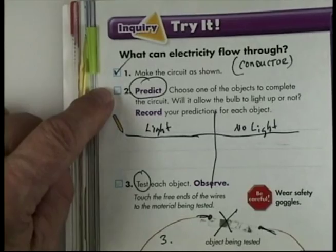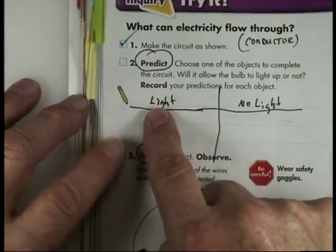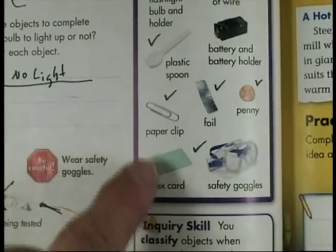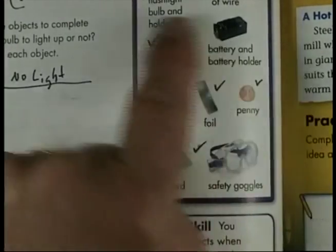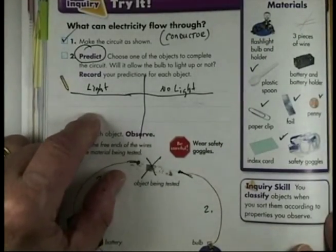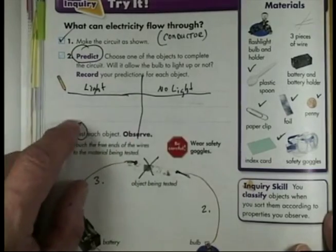Then we're going to predict the different objects. And I'm going to make my chart look like this: Light or no light. What objects are we talking about? We're talking about the spoon, the paper clip, the index card, the foil, and the penny. So these five objects you need to predict first whether they were light or no light on this particular circuit.